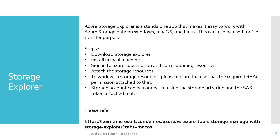When signing into a storage account and starting the movement, you should use a storage account connection string along with a SAS token. The connection string helps you connect to a particular storage with a URL, and the SAS token is an authentication token that grants you access to perform actions on that storage. So the steps are: download Storage Explorer, sign in to the corresponding Azure resources, obtain the proper RBAC role, and use the SAS token to connect to the storage account.